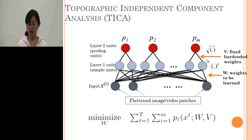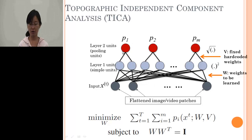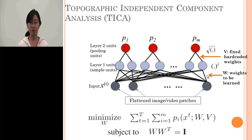To learn the weight matrix W, we minimize the summation of the top layer's activation P. Given a new 2D patch, the activation of the top layer will be sparse, detecting what kind of feature it is. We can treat this weight matrix W as filters.